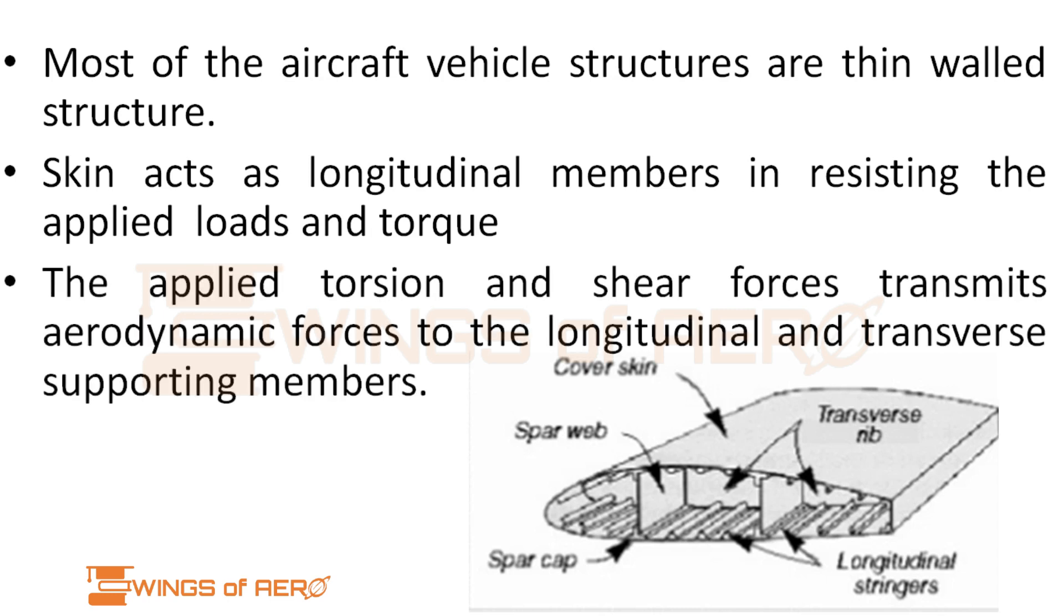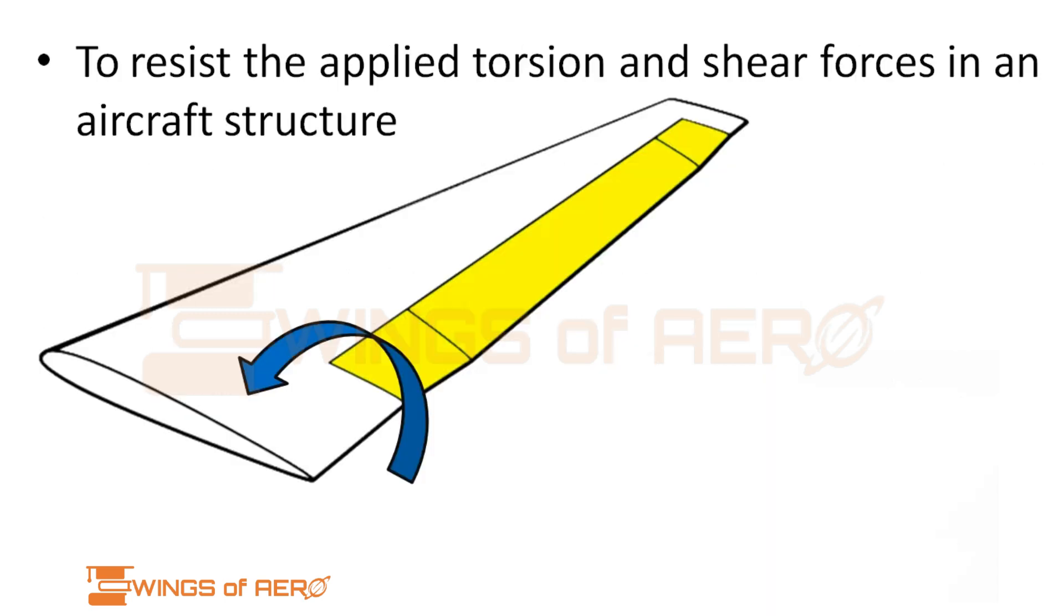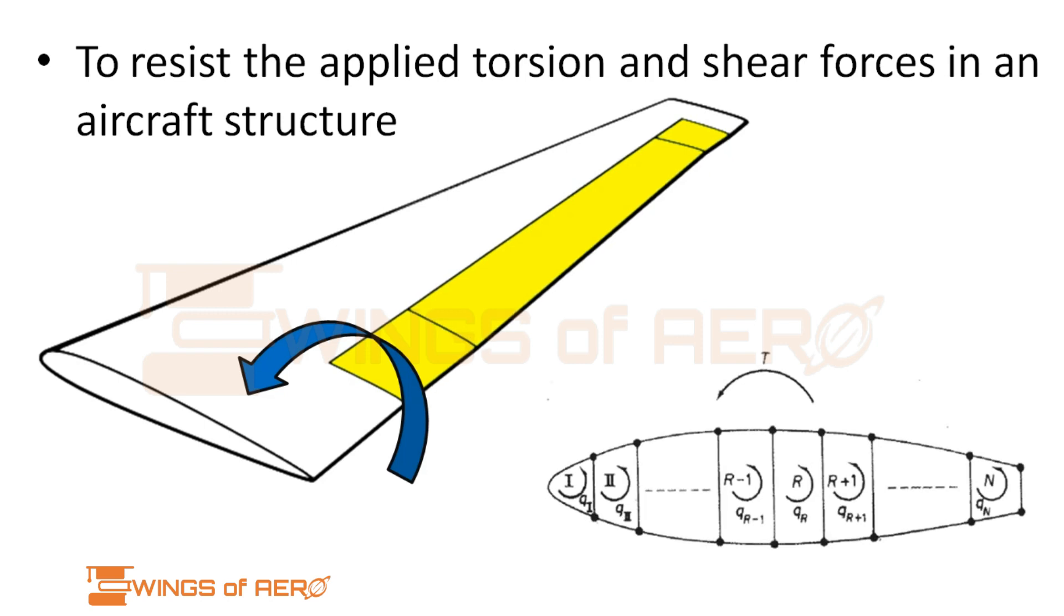This applied torsion and the shear forces transmit the aerodynamic forces to the longitudinal and transverse supporting members. To resist the applied torsion and shear forces in an aircraft structure, we are using a multi-cell structure for effective load distribution.